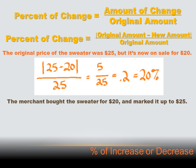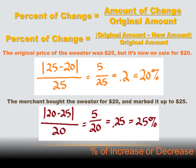How about this problem? The merchant bought the sweater for $20 and marked it up to $25. We get the absolute value of the difference: the original price $20 minus the new price $25 is minus $5, but we take the absolute value, so $5. We divide that by the original amount, which was $20. And $5 divided by $20 equals 0.25, or 25%.